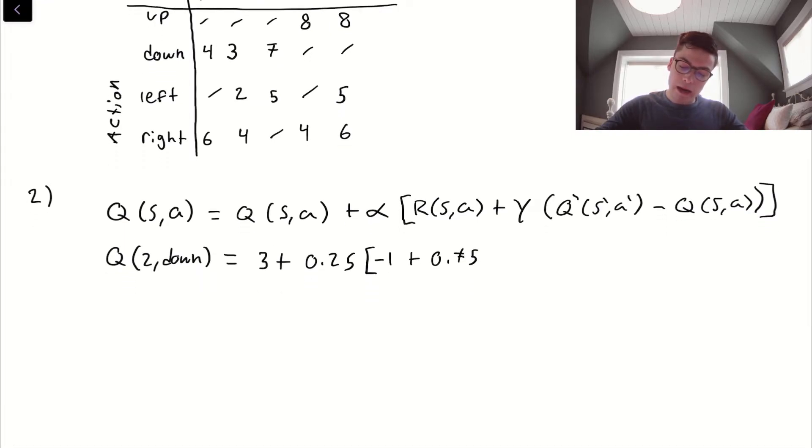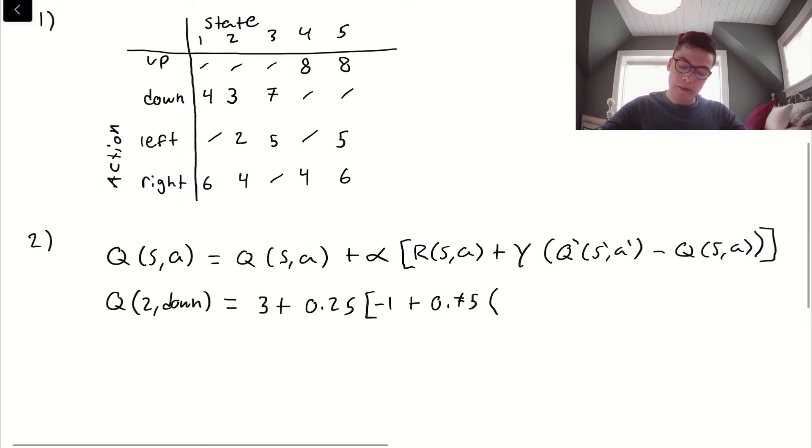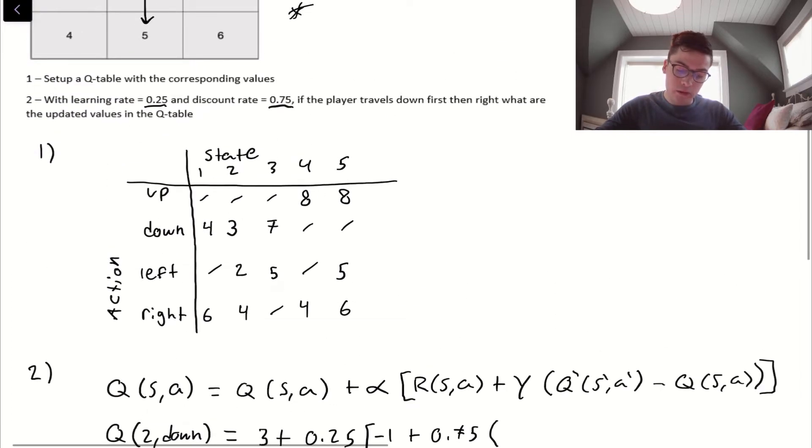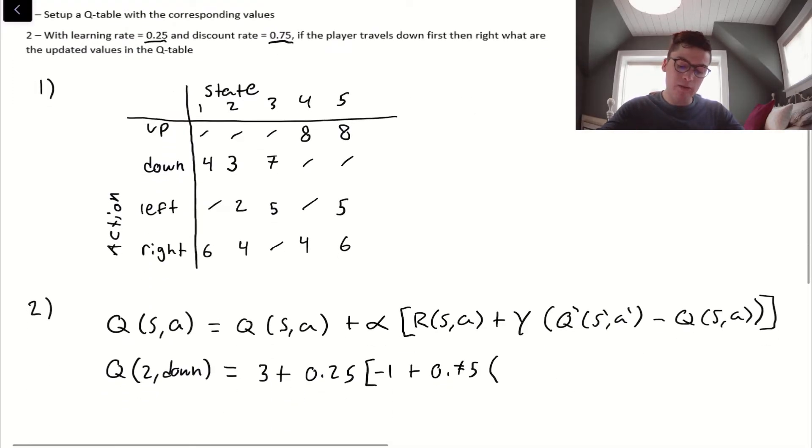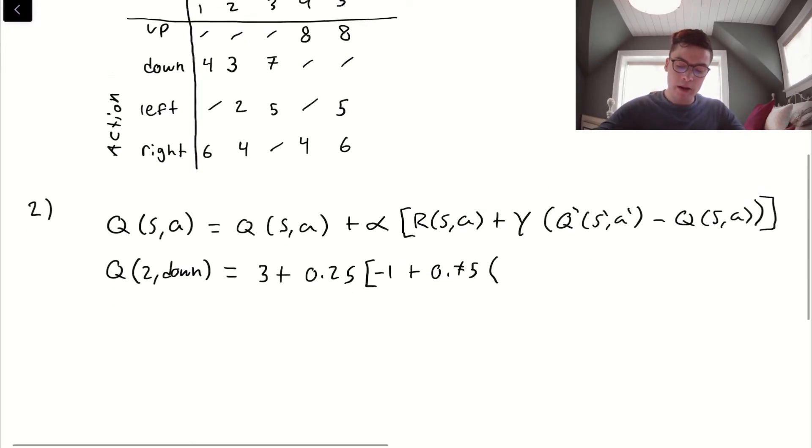Plus gamma, which is 0.75. And we have Q prime. Q prime, in this case, is going to be the max value possible for the next state. We're going from 2 to 5, so we're going to look at 5 in the Q table. We have 8, 5, and 6 as the possible values. We're going to choose the maximum one, and that's going to be 8. So, 8 minus Q(S,A), which is 3. If we compute that, that is 3.6875.